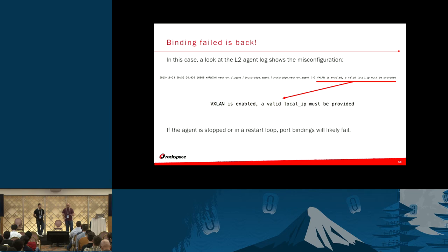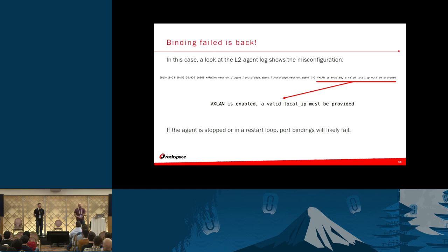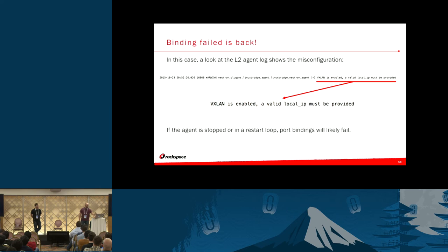Looking at the L2 agent log on the network node hosting those two devices, we see the error: 'vxlans enabled, a valid local IP must be provided.' In the ML2 configuration file, when you configure interface mappings on the host, you also configure VXLAN information like the VTEP address for that node. When the Linux bridge agent starts, it takes that IP and tries to configure point-to-point tunnels between hosts. When the IP is either wrong or not applied to an interface, you see this error. Neutron is then unable to interface with the agent to determine how to plug in the DHCP or L3 ports, resulting in a binding failed error. Correcting the problem and restarting the agent should result in successful port bindings.